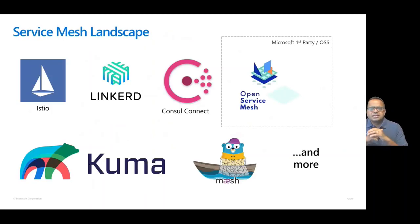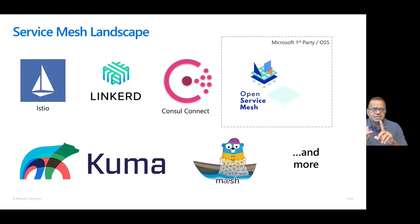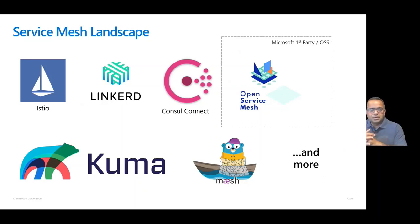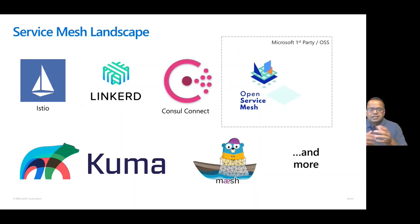Let's get a broad understanding of the Service Mesh landscape. One of the most full-featured, complex but extensible offerings that can span multiple clusters would be Istio. If you're looking for something relatively lightweight, there's Linkerd, which has fewer features. If you need a Mesh that spans multiple forms of compute — virtual machines, Kubernetes clusters — then you might want to look at Consul Connect. And then we will talk about the Open Service Mesh offering. You have a plethora of Service Mesh options, and you may want to pick one based on the capabilities we just discussed.